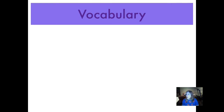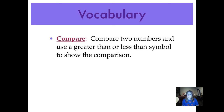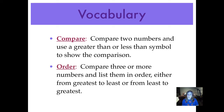Here is our vocabulary for tonight. Remember to pause after I post a term so that you have time to write it down exactly as I wrote it. Our first vocabulary term is compare — underline that. Compare two numbers and use a greater than or less than symbol to show the comparison. To order is when we compare three or more numbers and list them in order either from greatest to least or from least to greatest. We actually don't use the symbols when we're ordering numbers — only when we're comparing two numbers.